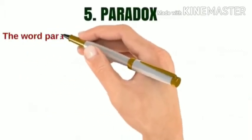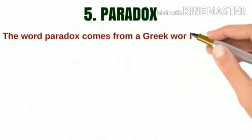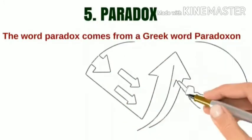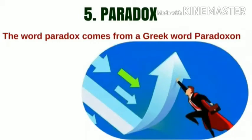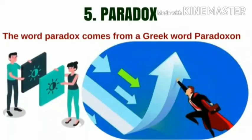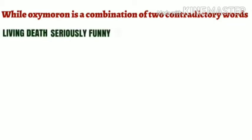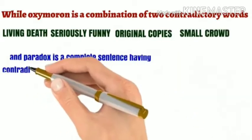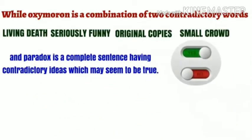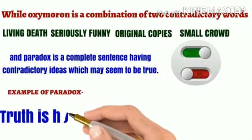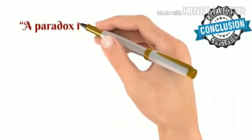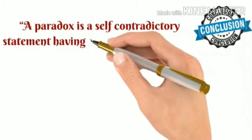Paradox. The word paradox comes from the Greek word paradoxon, which means contrary to expectations and existing belief. There is only a little similarity between oxymoron and paradox. While oxymoron is a combination of two contrary words — meaning a phrase of two words can be a complete oxymoron — paradox is a complete sentence having contrary ideas which may seem to be true. A paradox is a self-contrary statement having some hidden meaning.